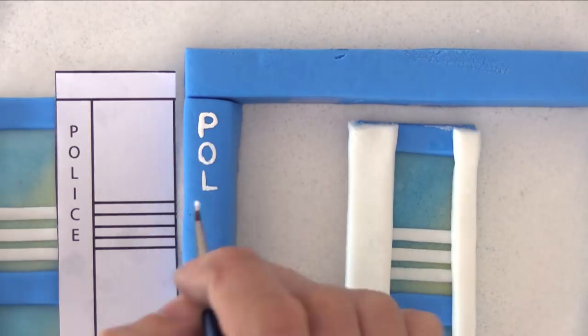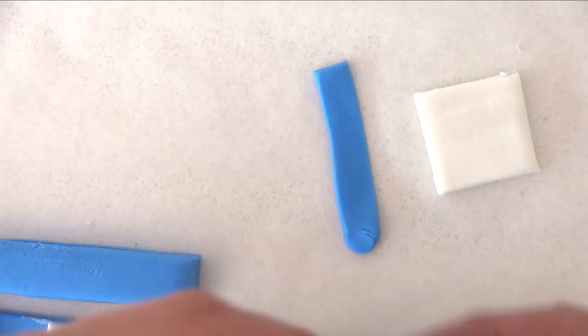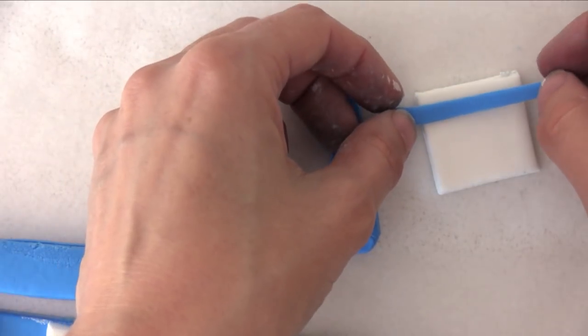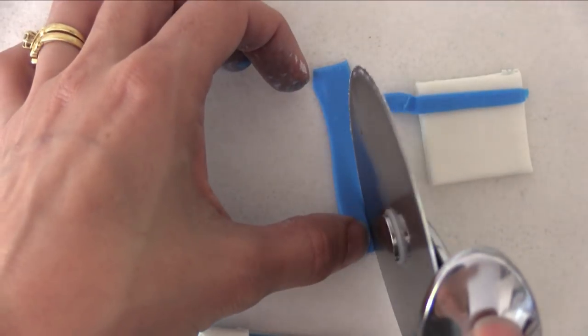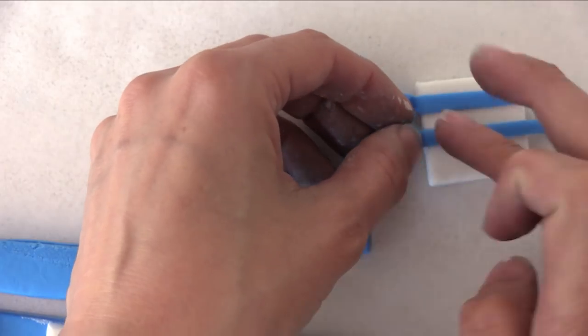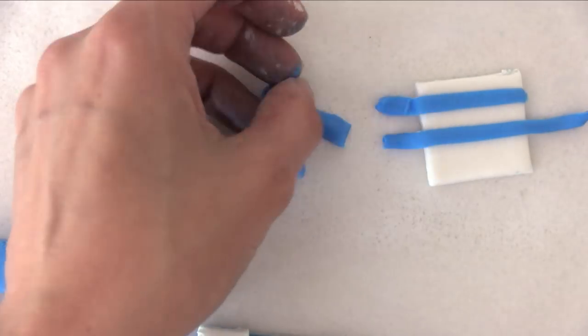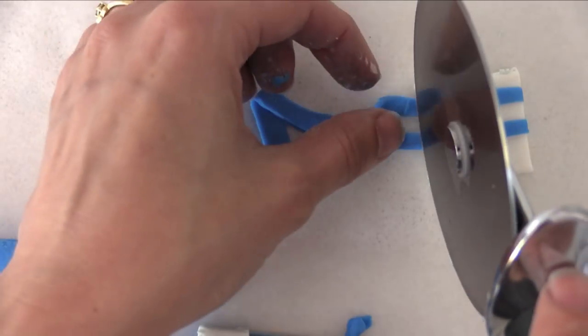Using edible white food coloring, write the word police down the front of your blue support. For the police sign, cut a square of white and put two blue strips across the top. All of these fondant details can be made up to a month ahead which will give them time to dry out. If you need to make them for a cake today or tomorrow, then you'll need to add some Tylose powder to the fondant which will make it dry out faster.